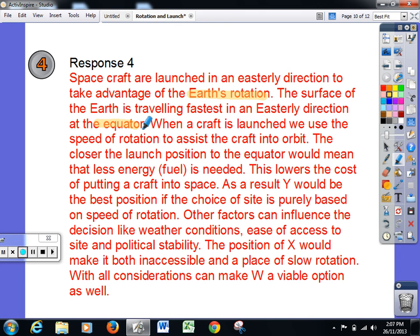Now it's going to explain. When a craft is launched, we use the speed of rotation to assist the craft to get into orbit. So there is the idea of the addition of velocities. And the closer the launch position is to the equator, the less fuel, the less energy is needed. So it gives this finally a reason. And that ultimately is to do with cost. All of these craft going into space require a huge amount of fuel, a huge amount of cost.